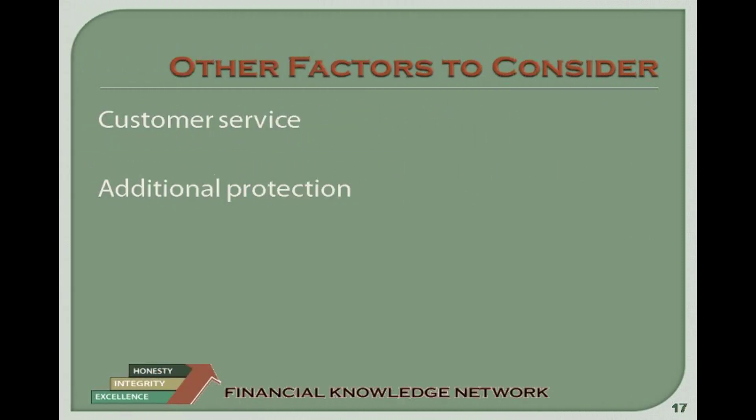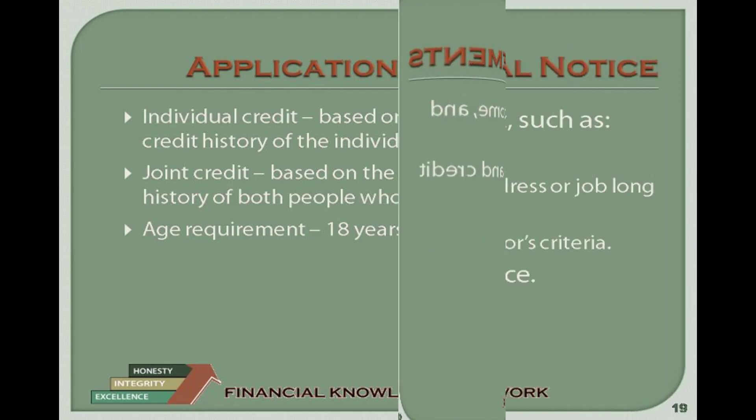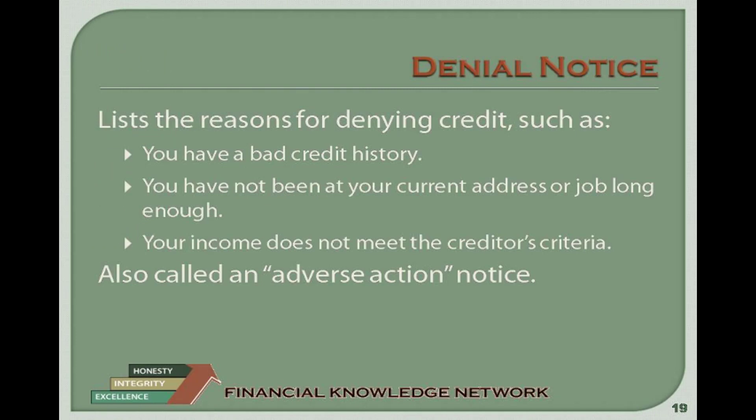In addition to the factors described, carefully consider any additional protections as well as the customer service levels associated with the card. When applying for a credit card, you must be 18 years old to apply for individual credit — when you are the sole applicant based on your income, assets, and credit history. If you are married, you may apply for joint credit, where the creditworthiness of both applicants is considered collectively. If you are denied credit, it will most likely be because of a negative credit history, insufficient time at your job or residence, or income that does not match the criteria. The creditor is required to send you an adverse action notice, which you can use to acquire a free copy of your credit report.